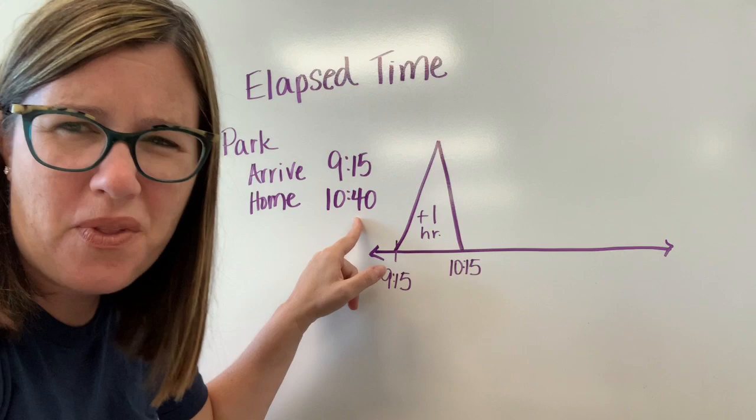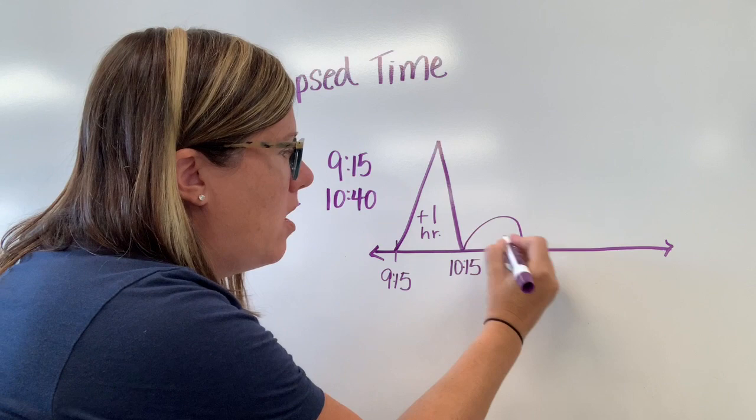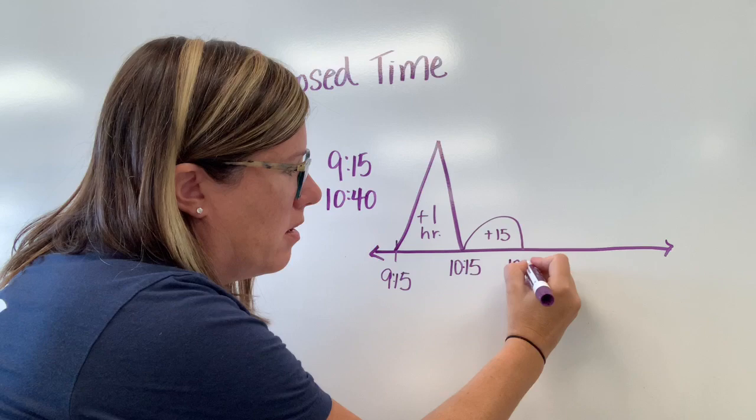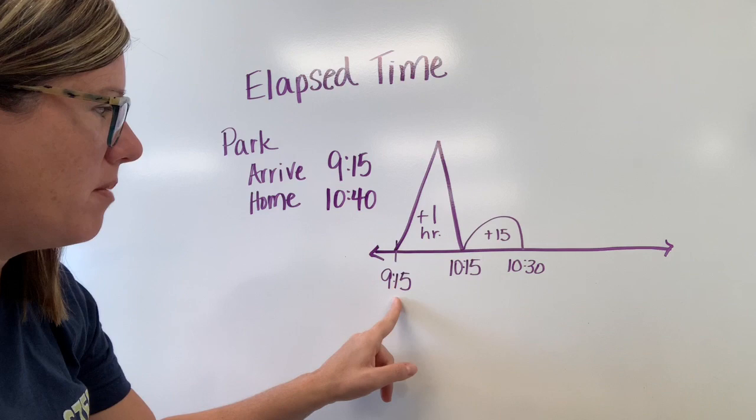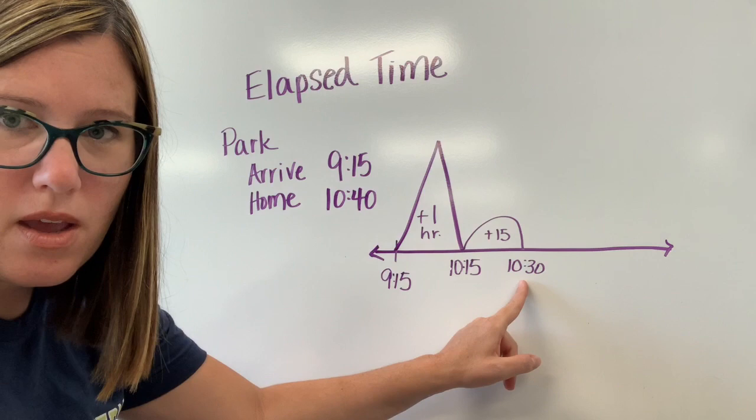Now I need to go from 10:15 to get to 10:40. Well that math is kind of hard for me. So I'm going to do a small hill because I know that if I add 15 minutes from 10:15 I'll get to 10:30. So I did a mountain to add an hour, went from 9:15 to 10:15. Then I did a hill to get from 10:15 to 10:30.